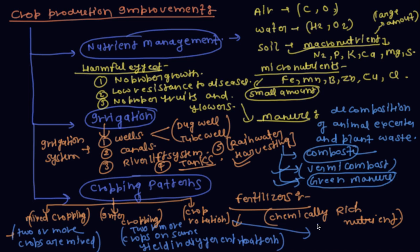So these are the three types of cropping patterns: mixed cropping, intercropping, and crop rotation. This is the crop production improvement. Please download the Coral Learning app. If you already downloaded it, enjoy learning. Thanks for watching this video.